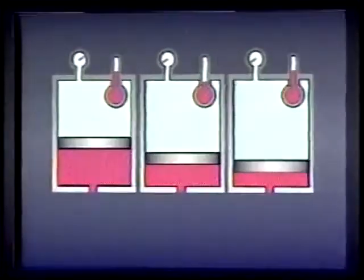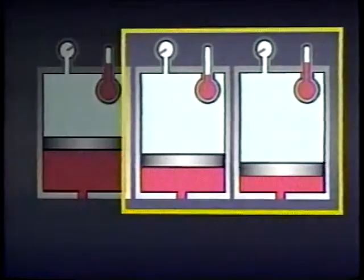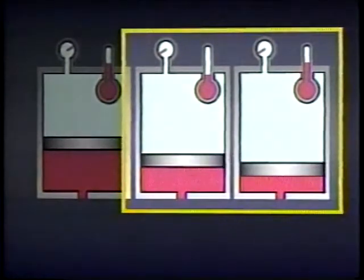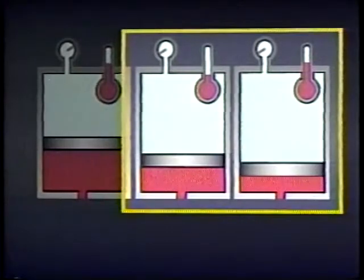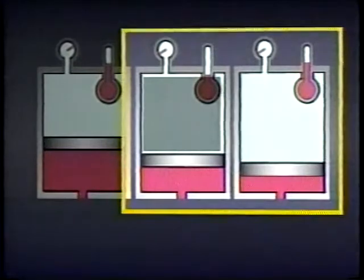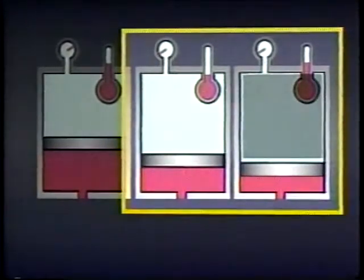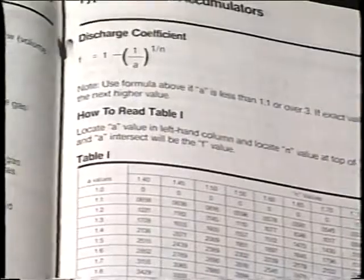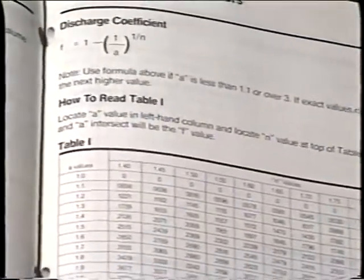Discharging fluid from an accumulator can also be done adiabatically or isothermally, and the effect on usable volume is very similar. When fluid is discharged rapidly, less fluid is released because the pre-charge doesn't have time to expand as much as it would have if the accumulator had been discharged more slowly. The other factor that affects accumulator performance is the pressure of the pre-charge.